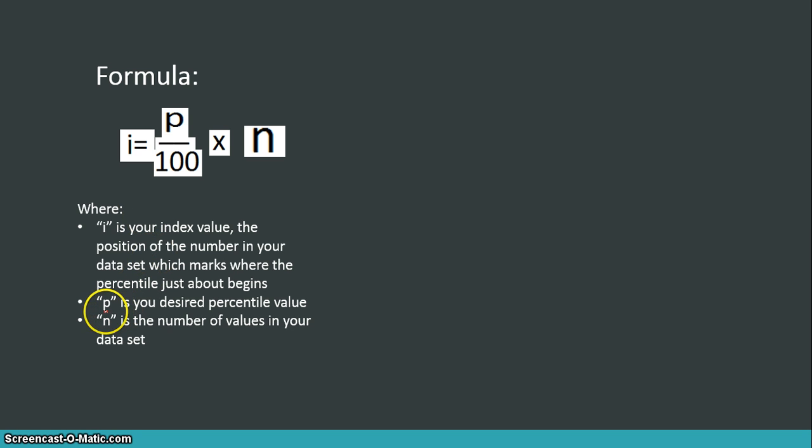P is your desired percentile. So let's say I want to calculate what number marks the 60th percentile. Well, my P is just going to be 60. And N is the number of values in your data set. So if I had a set of test scores that were, if I had a set of 30 test scores, my N would be equal to 30.